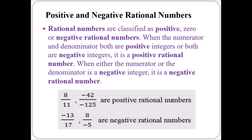In the first example, 8 and 11 are positive integers, hence 8 upon 11 is a positive rational number. For minus 42 upon minus 125, both are negative integers and hence it is a positive rational number. Now, minus 13 upon 17 and 8 upon minus 5 are negative rational numbers, since they have either the numerator or the denominator as a negative integer.